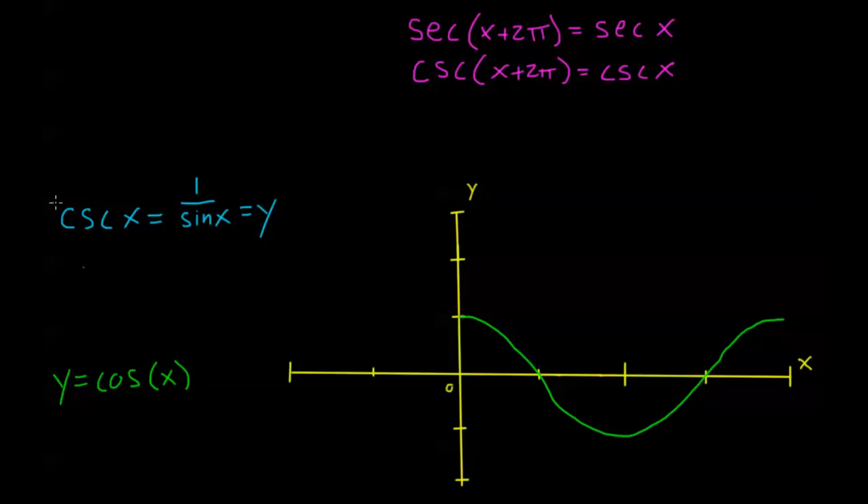Now here's my base period of cosine from 0 to 2π. So secant, if I have y equals secant of x, that's the same as y equals 1 divided by cosine of x.